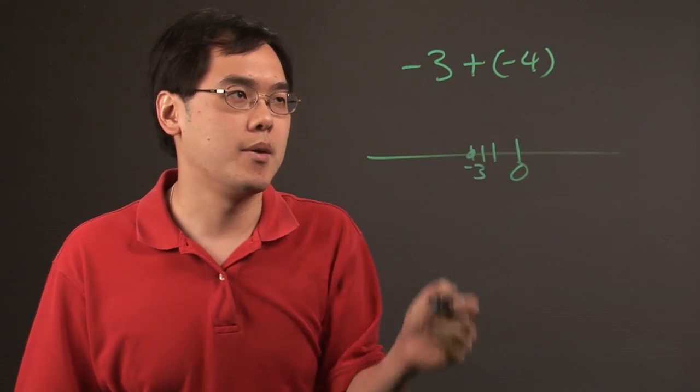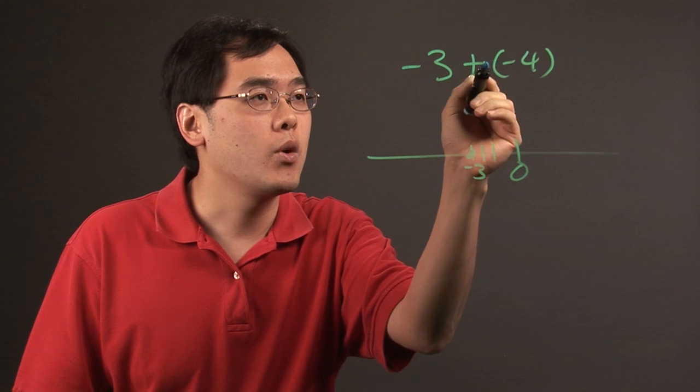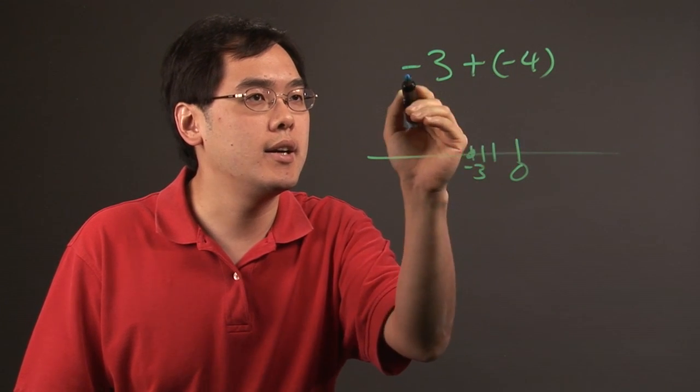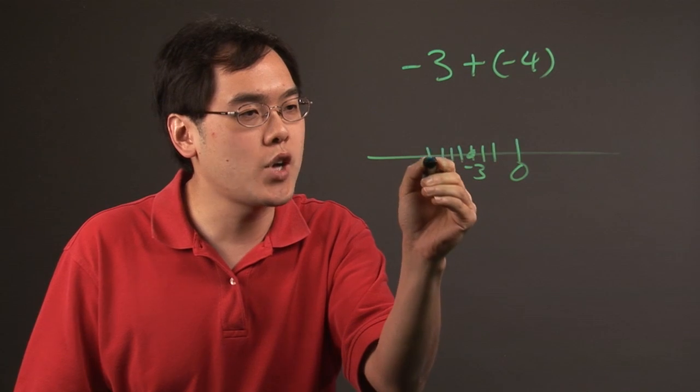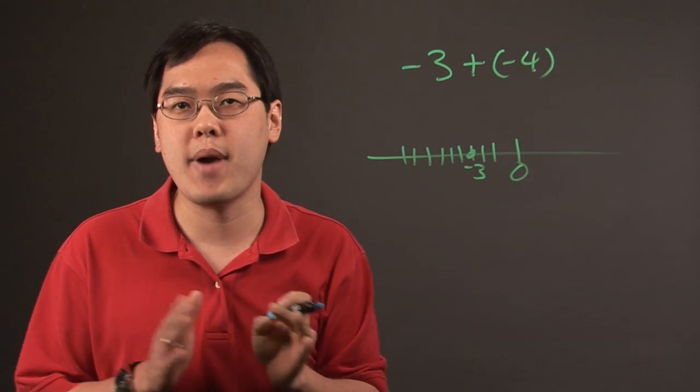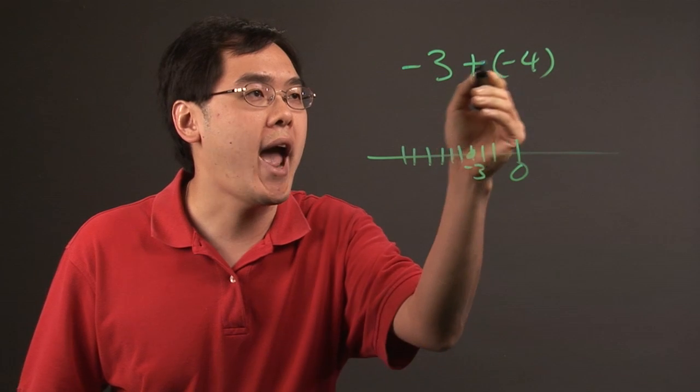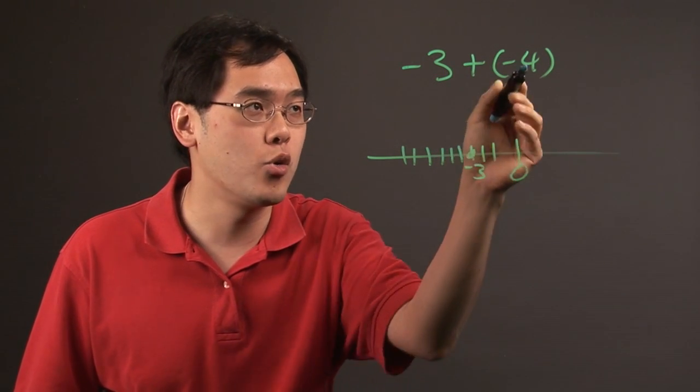Now when you're adding a negative number to yet another negative number, the idea is when you're adding a negative four to a negative three, because negative three is already negative, adding a negative four means you're actually staying on the path that you're already on. So adding a negative four means you're going to continue on the negative path for more places.